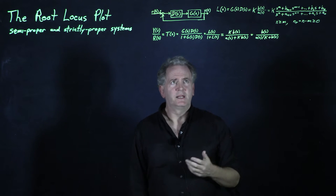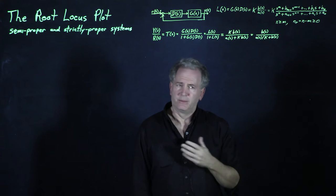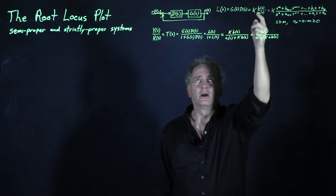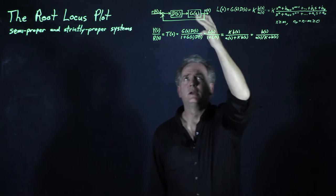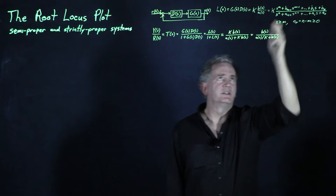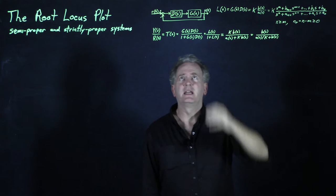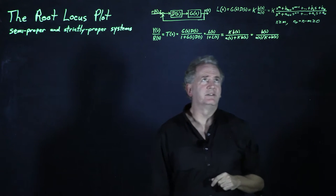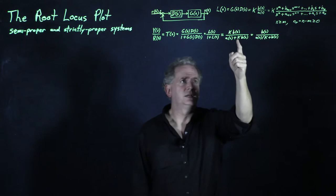What we do with the root locus plot is understand how the closed-loop poles move as we vary a parameter in the system. Typically, we look at variation with respect to the overall gain K in our expression for L(s). Some poles and zeros of L(s) come from G(s) and some from D(s), but the overall gain is something we can certainly adjust in D(s), and it appears explicitly in this expression.